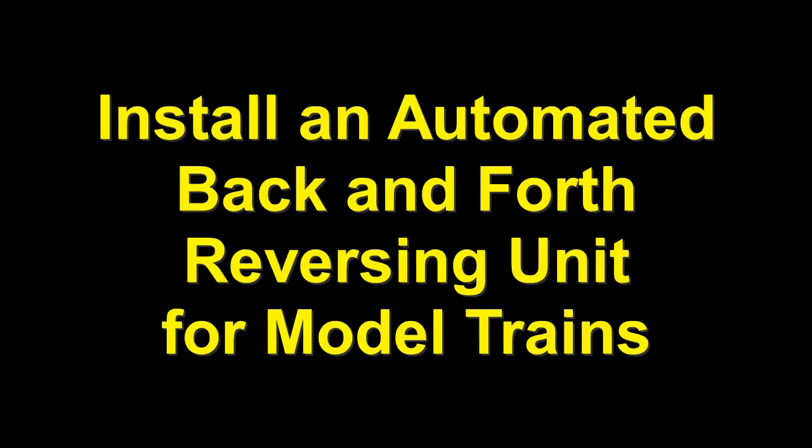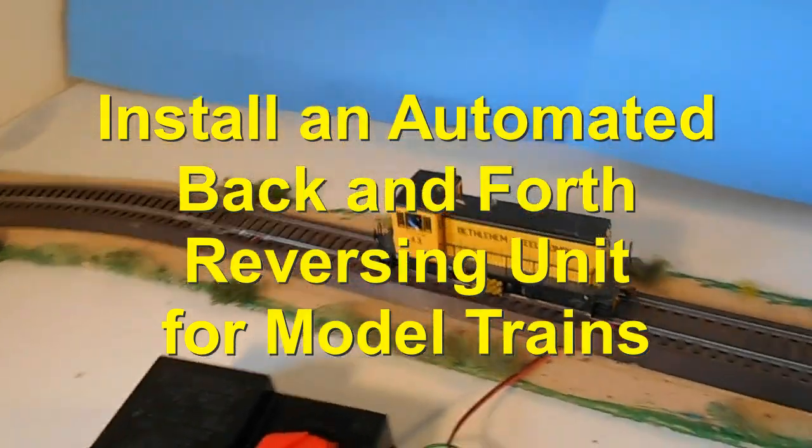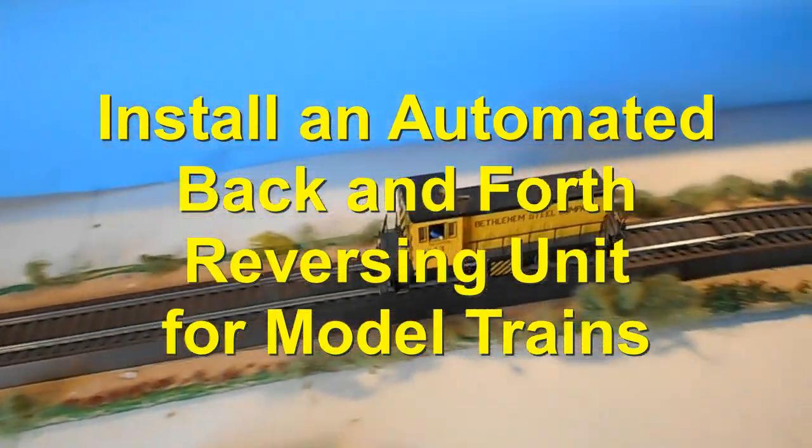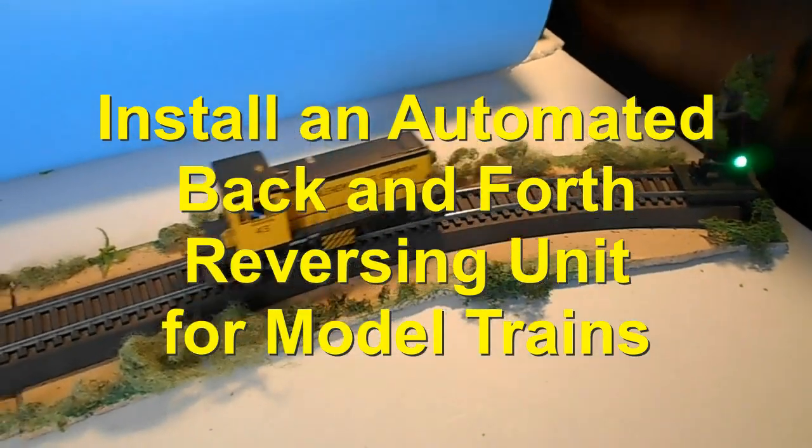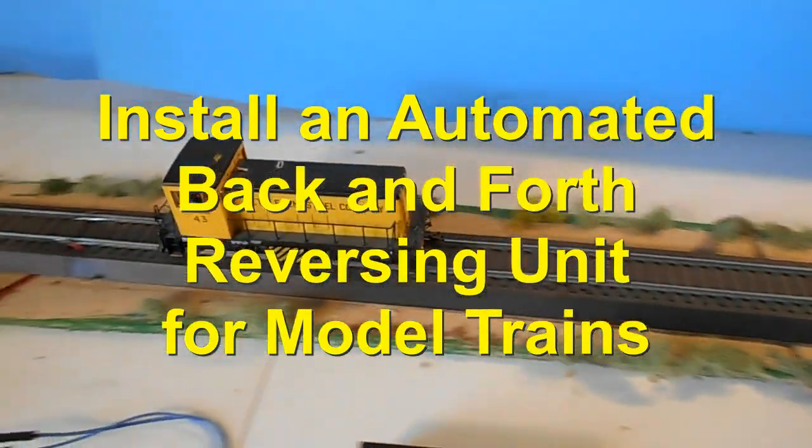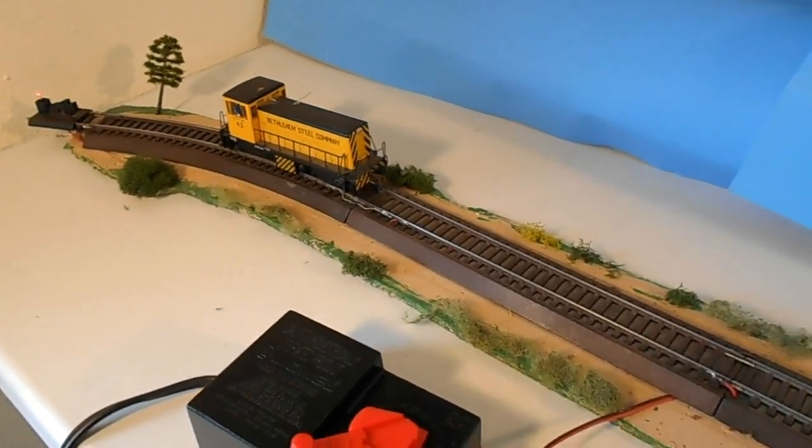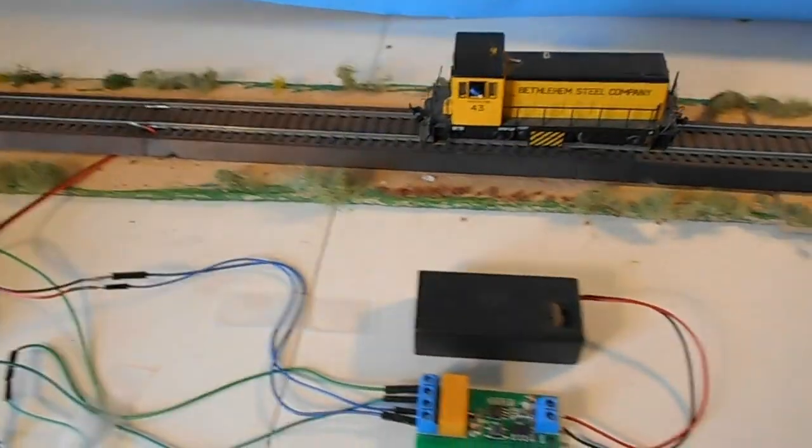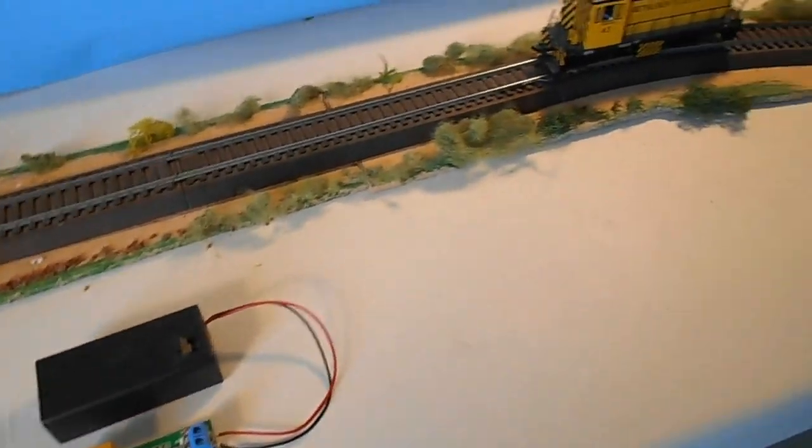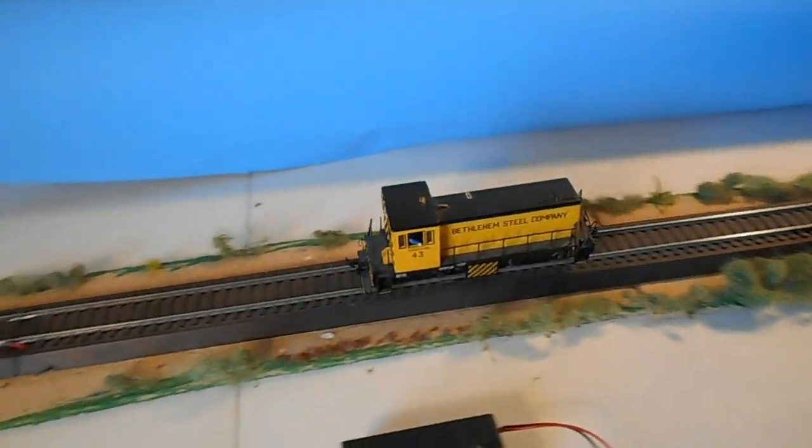Hello again, model railroad enthusiasts. Bob Wilkins here, this time with a modification of a previous project for installing a reversing relay board for automatic back and forth operation of a train. If you've ever wanted a train or trolley to go from point A to point B, stop, pause, and return to the starting point, then repeat the process automatically, then keep watching.